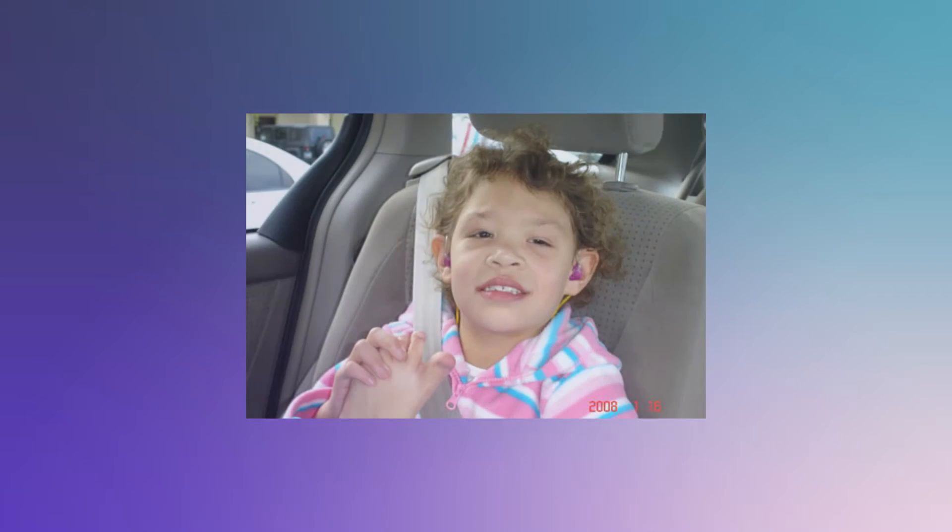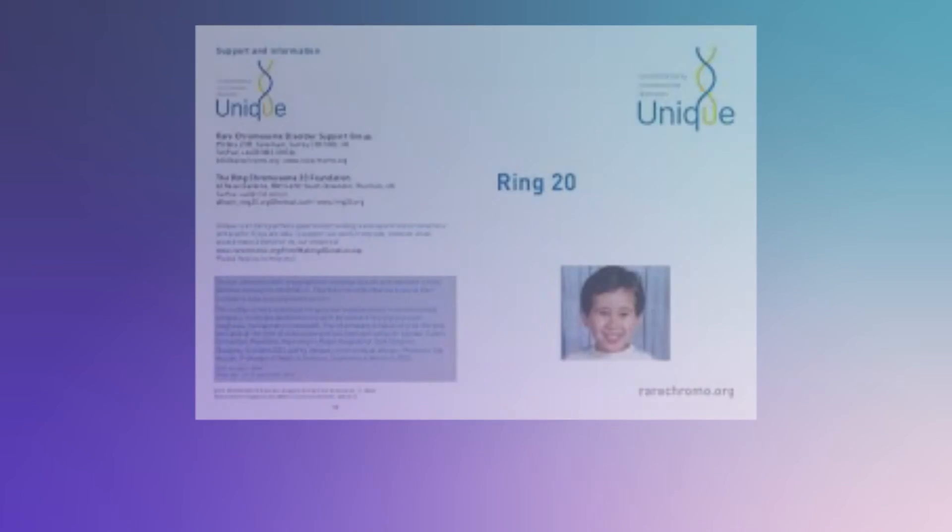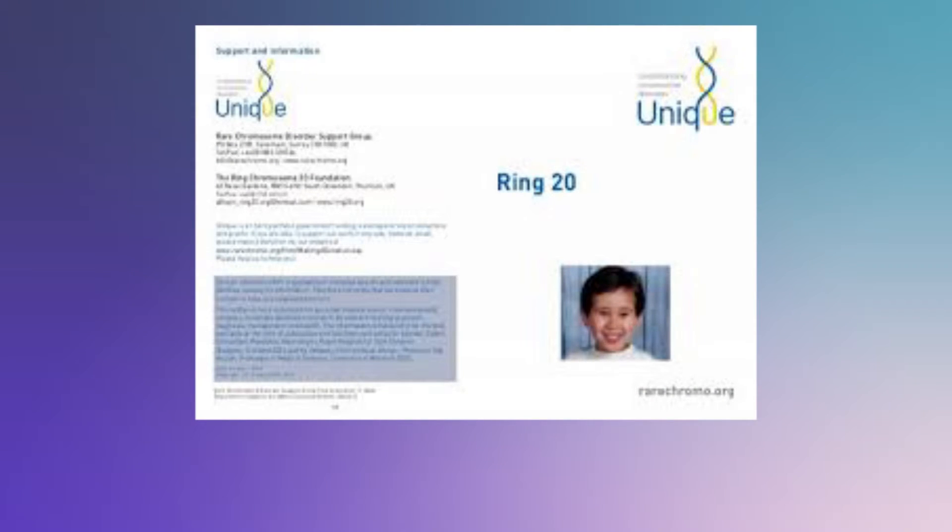Ring 18: intellectual developmental disorder, hypotonia, microcephaly, short stature, minor facial features, and abnormal male genitalia. Ring 20: refractory epilepsy syndrome, cognitive impairment, and absence of a consistent pattern of dysmorphology.